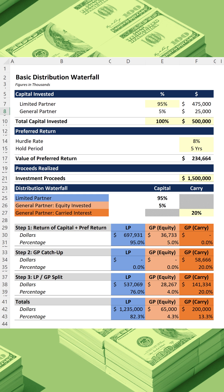So there you have it. The private equity firm would make $200 million in carried interest, and the capital they invested would grow to $65 million. Not bad.